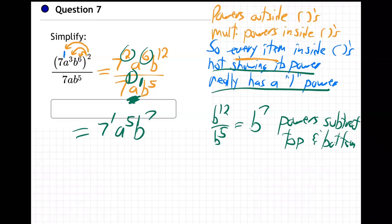B to the seven. So there's our answer and we're done. So what happened? The two minus one on the seven, powers of two and one subtracted. The six and one powers on the A's subtracted. Six minus one is five. And the B is 12 minus five is seven. And so there we go.